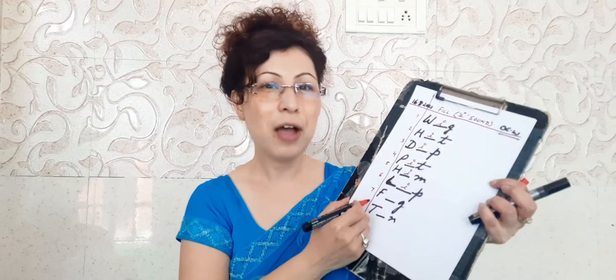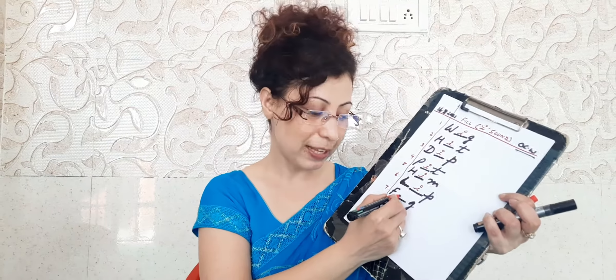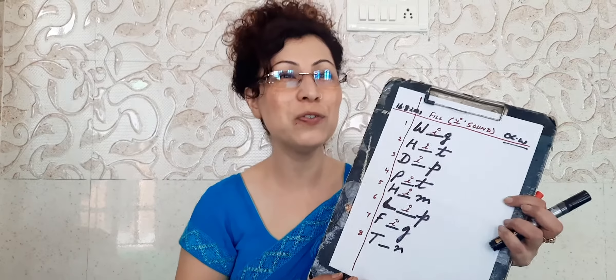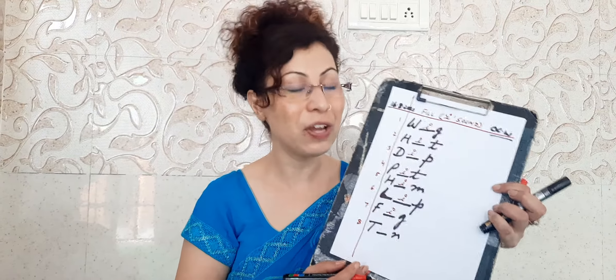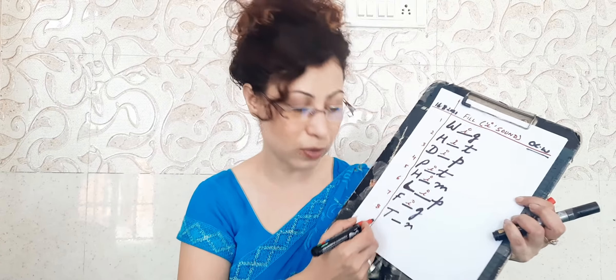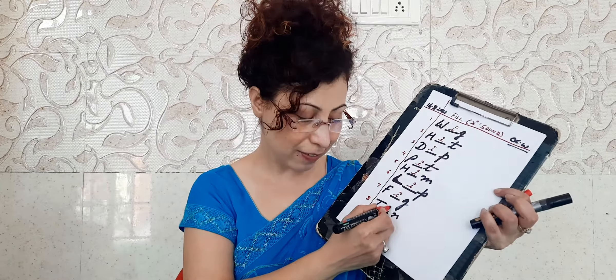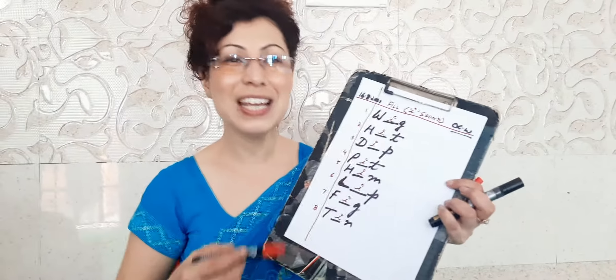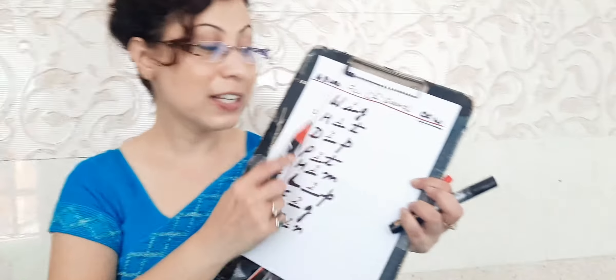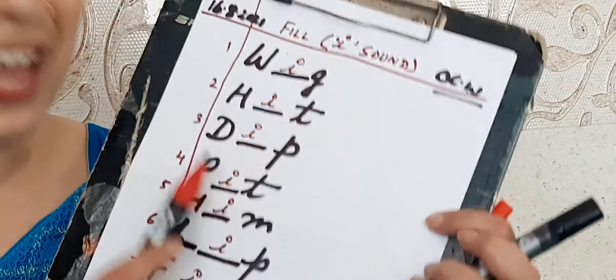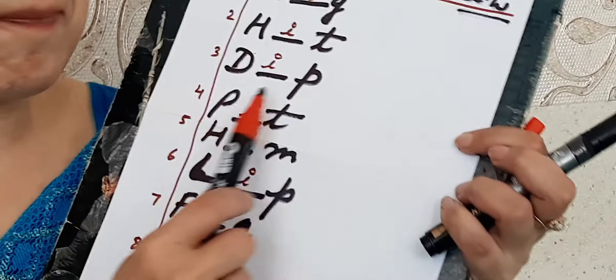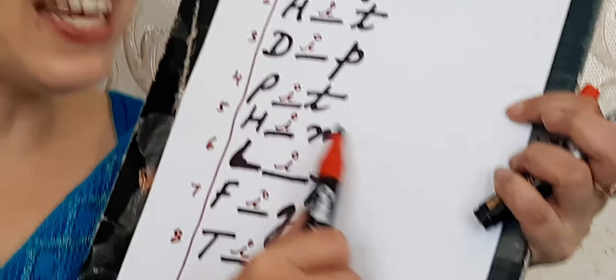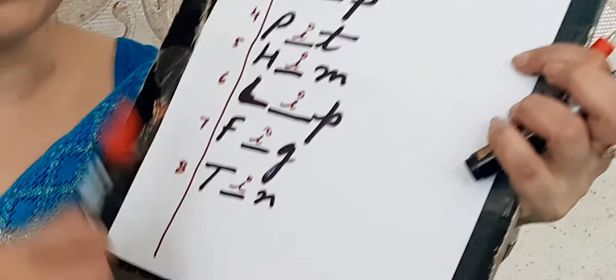Next: F-G. Let me use the small i. What will the word be? F-I-G — fig. Very good. Last word of this class: T-N. T-I-N — tin. Now let's revise all the words. W-I-G, H-I-T, D-I-P, P-I-T, P-I-N, L-I-P, F-I-G, T-I-N.